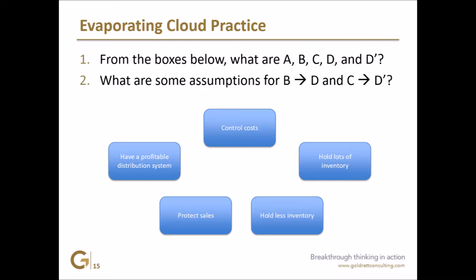What's C? The other side? Protect sales. Protect sales, right. And in order to control cost, what must we do? Hold less inventory. Hold less inventory. And so that means in order to protect sales, we must hold lots of inventory, right?